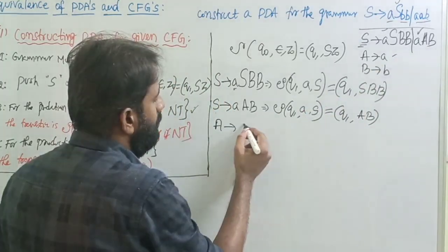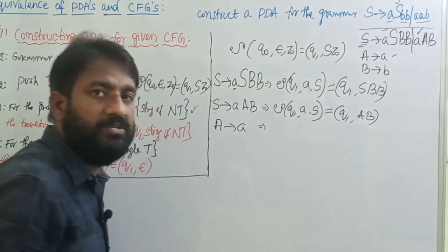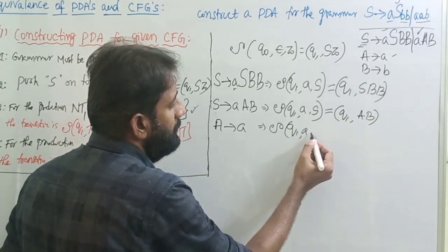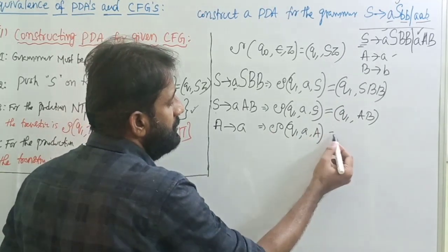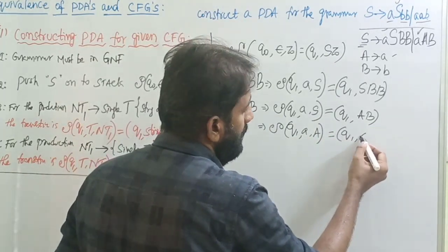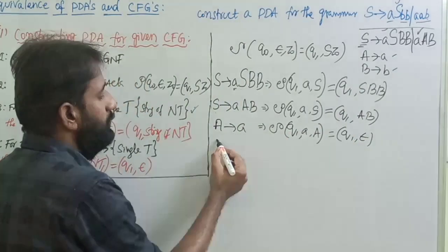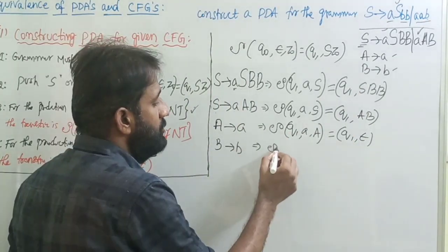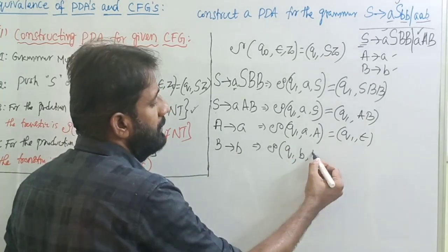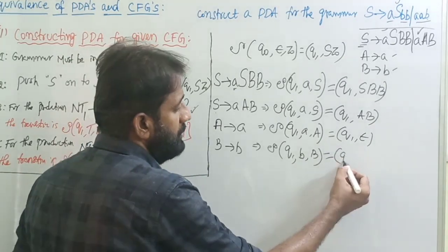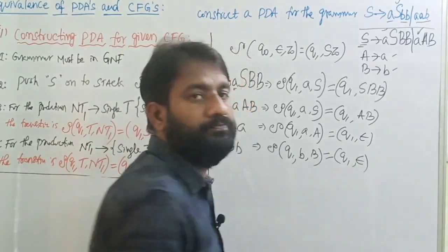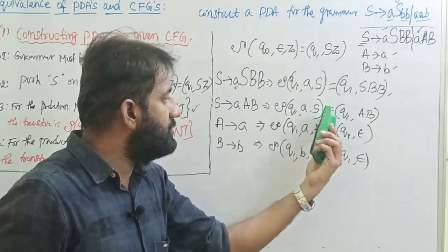For capital A — that equals popping A, since nothing replaces it — we do the pop operation, remaining on the same state: δ(Q1, a, A) = (Q1, ε). Now take the next production B → small b. Transition of Q1, input symbol is b, top of the stack is capital B, equals remaining on the same state by doing the pop operation: δ(Q1, b, B) = (Q1, ε).